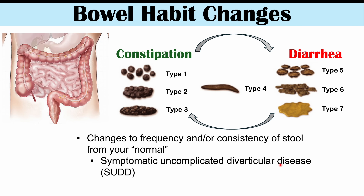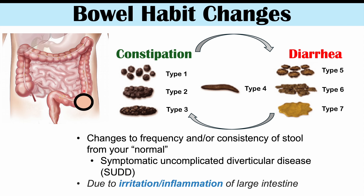Why do bowel habit changes occur? An inflamed, enlarged diverticula — most commonly in the sigmoid colon — causes irritation and inflammation in that area of the large intestine. This changes gastric motility and how much water is absorbed from stool, since the large intestine is very important in water absorption. These effects lead to changes in stool consistency and frequency of bowel movements.